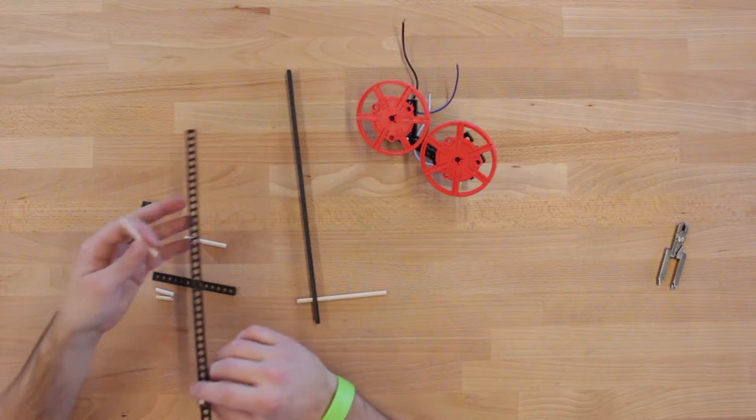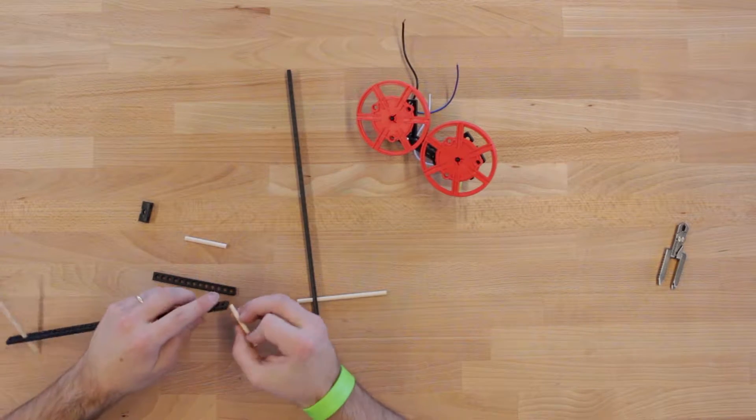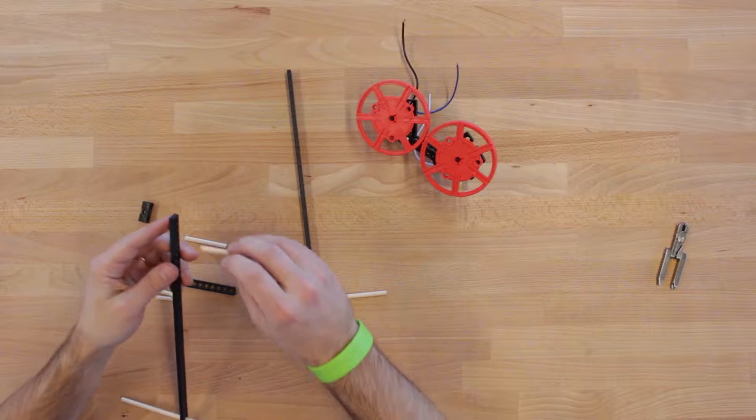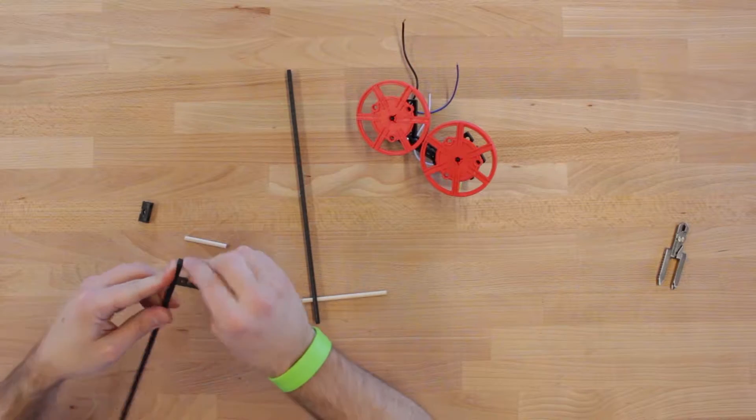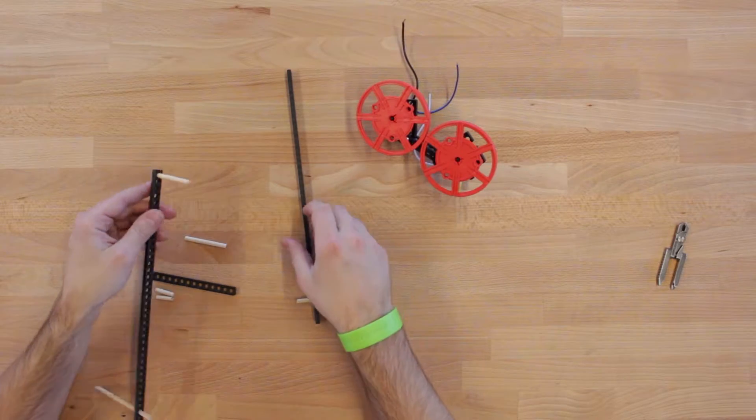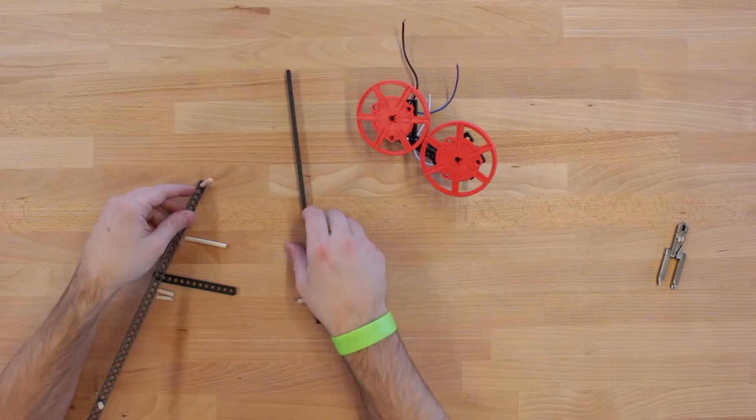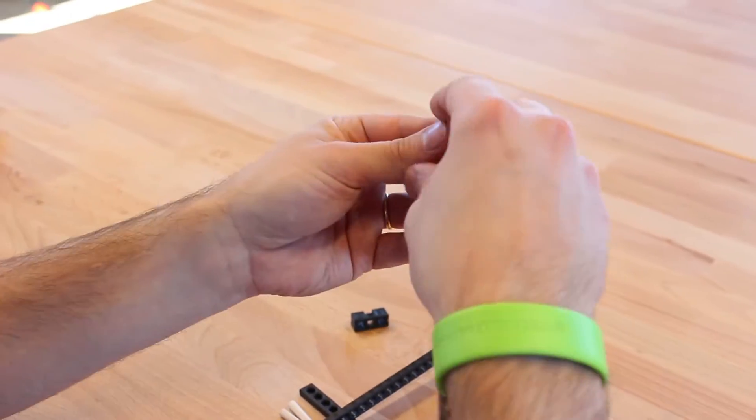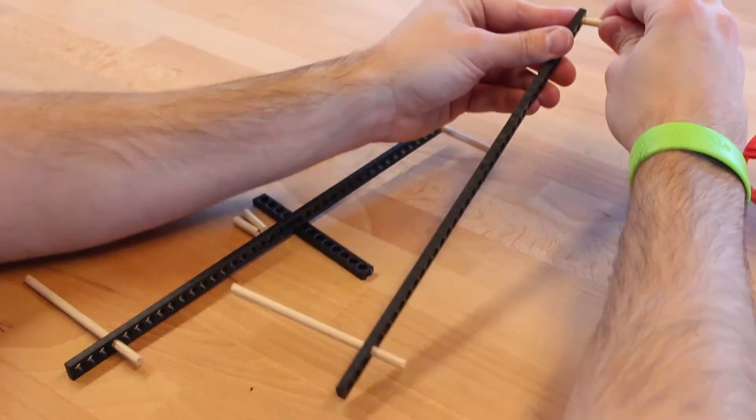Then install a two-inch dowel in the other end of each of the black plates. Install it the opposite direction of the last dowel and push it on until it's flush with the end of the black plate. Repeat for the other black plate and your other two-inch dowel.